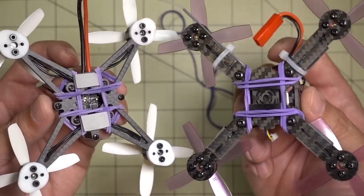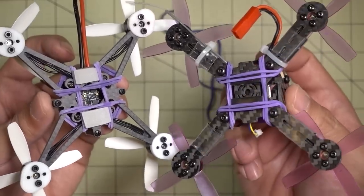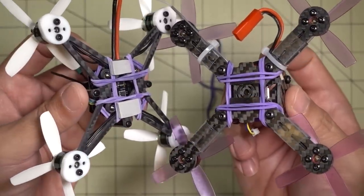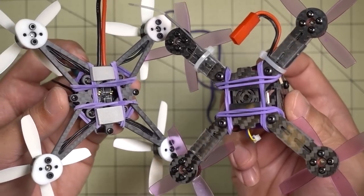Hey guys, so a quick video here today. I want to show you how I put rubber bands on the bottom of micro drones to attach my batteries. I found this to be a pretty good way to do this.